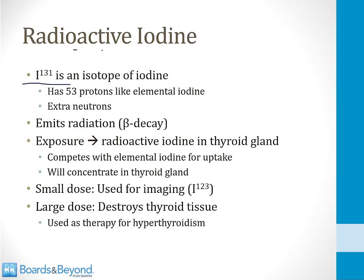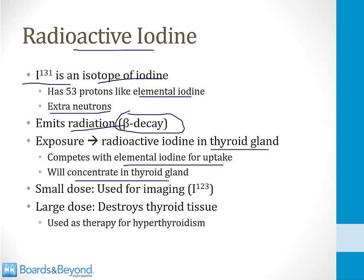Iodine-131 is radioactive iodine — an isotope of iodine with 53 protons but extra neutrons, which causes it to emit radiation via beta decay. When patients are exposed to radioactive iodine, it is taken up by the thyroid gland, concentrating there as it competes with elemental iodine. Radioactive iodine is used medically for two purposes: in small doses to image the thyroid gland — though iodine-123 is also often used for this — and in large doses to destroy thyroid tissue as therapy for hyperthyroidism, after which patients take thyroid supplementation.